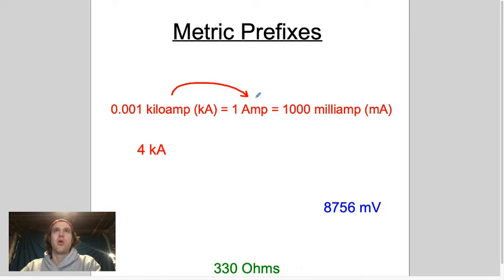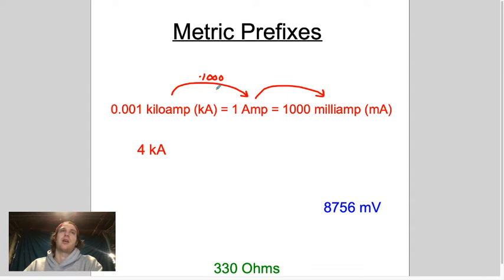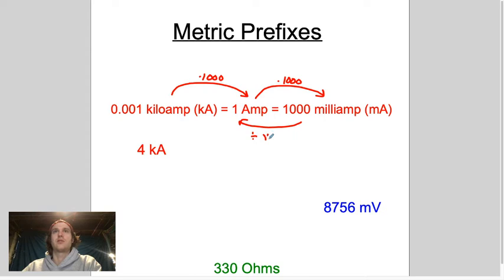To convert: going from kiloamps to amps, or from amps to milliamps, you multiply by 1,000. Going the opposite direction, you divide by 1,000. Think of it like feet versus inches — smaller units mean more of them. So four kiloamps equals 4,000 amps, and 4,000 amps equals 4,000,000 milliamps.